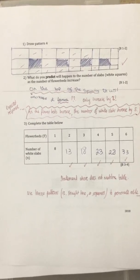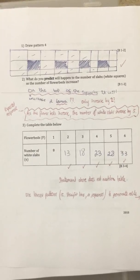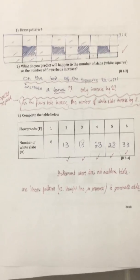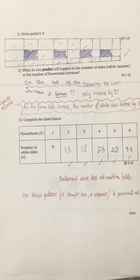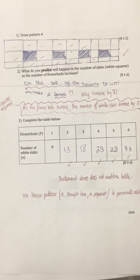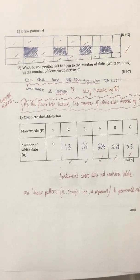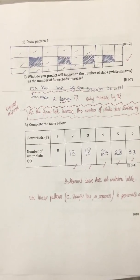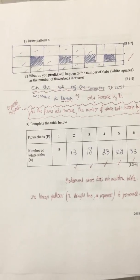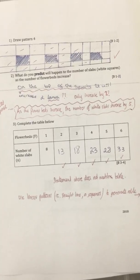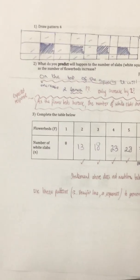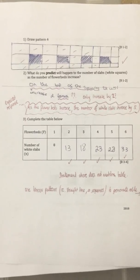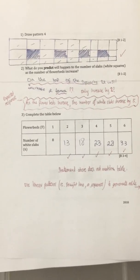Question 2: What do you predict will happen to the number of slabs — the white squares — as the number of flower beds increases? For grade 6, we're just looking for a simple sentence. In this student's example, they wrote it increases 2 times. This student hasn't quite grasped that as one flower bed is added, the white squares actually increase by 5. We would expect at least 90% of students to answer the first two questions correctly.